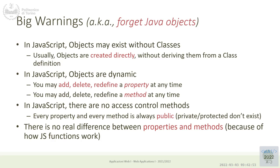The first slide here — if you know something about objects in other programming languages, please forget it. Especially objects from Java, but also objects from Python. Because in many object-oriented programming languages, objects are instances of classes. This is not true in JavaScript.